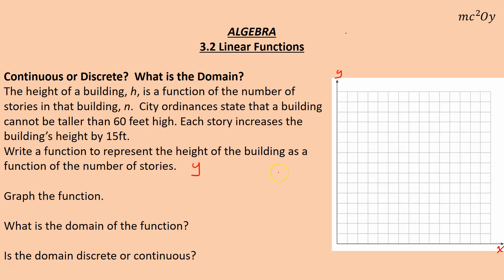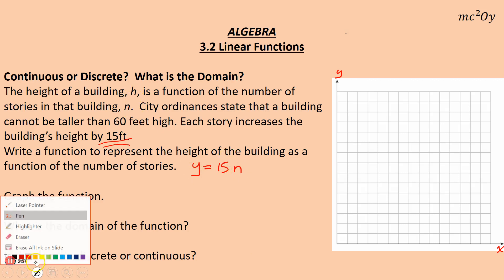So y equals, since each story increases the building height by 15 feet, I am going to say 15 times the number of stories n is equal to y, or in this case, I guess it's not equal to y. We're going to call it equal to h. Now once again, if it's a math purist out there, you're upset because I'm not in function notation when it says write a function. So I am going to say that we're writing it in an equation format. For those of you who really want to know function format, this would be h of n equals 15n. But I think that confuses the situation more than it helps right now. So here's my equation, h equals 15n.